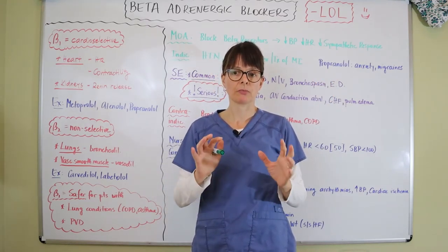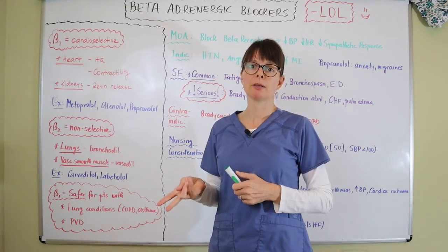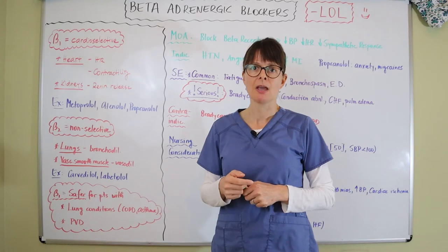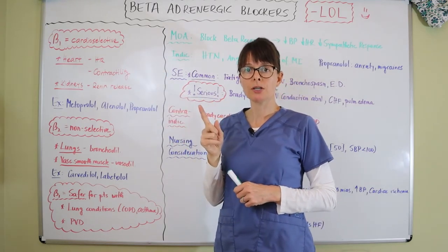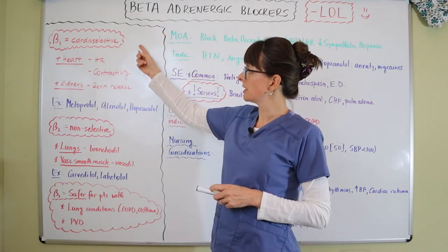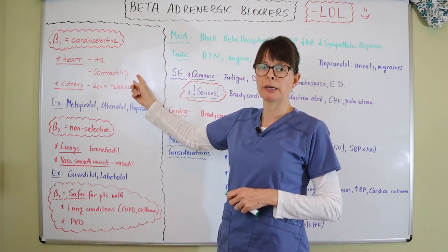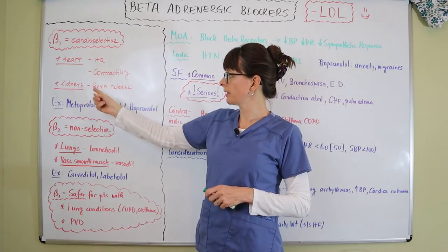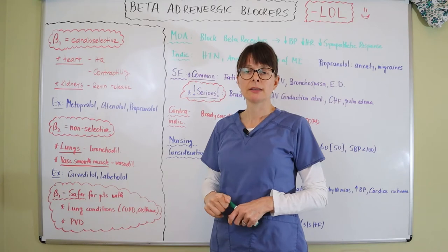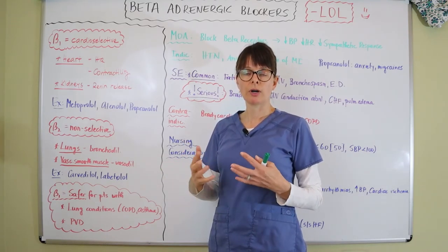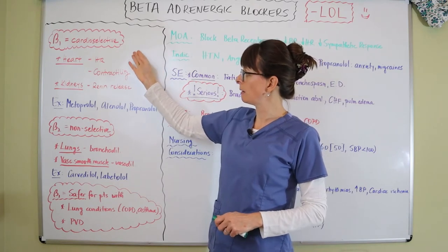For beta blockers, we distinguish between beta 1 and beta 2 receptors located in different parts of the body. Beta 1 receptors are cardio-selective — a helpful mnemonic is 'one heart, beta 1.' They regulate the sympathetic response affecting heart rate and the heart's ability to contract. They're also located in the kidneys, where they release renin, an important part of the RAS (renin-angiotensin-aldosterone system) that helps regulate blood pressure. Examples of beta 1 cardio-selective blockers include metoprolol, atenolol, and propranolol.